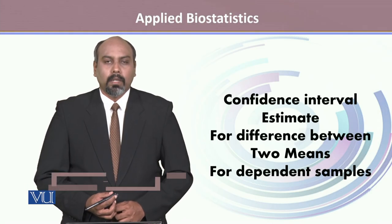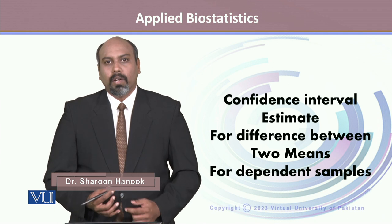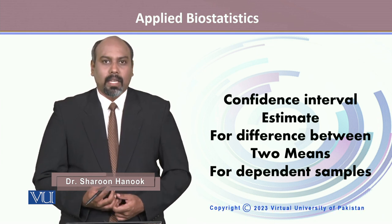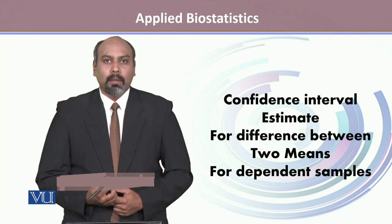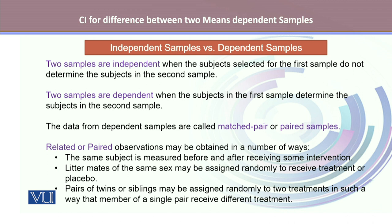This module talks about confidence interval estimates for the difference between two means, but in this case we'll talk about a case where our samples are dependent. First, we'll look at the difference between independent samples and dependent samples. Two samples are called independent when the subjects selected for the first sample do not determine the subjects in the second sample. Contrary to this, two samples are dependent when the subjects in the first sample determine the subjects in the second sample. The data from dependent samples are called matched pairs or paired samples. We also use the term related or paired observations for such type of samples.